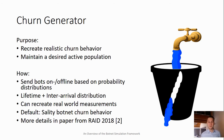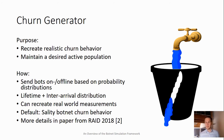The distributions we have chosen can be fed from real-world measurements — for example from the Sality botnet or the ZeroAccess botnet — to recreate the churn pattern observed in real-world botnets. If you want more details, have a look at our paper from RAID 2018 where we explain the churn in greater detail.